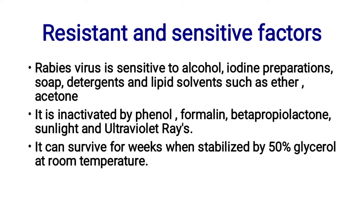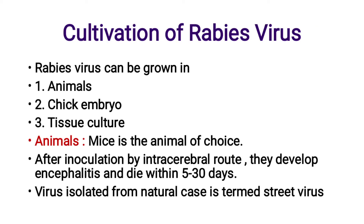It can survive for weeks when stabilized by 50% glycerol at room temperature. Then cultivation of Rabies Virus. Rabies Virus can be grown in animals, chick embryo, and tissue culture. In the case of animals, mice are the best choice for cultivation. After inoculation by the intracerebral route, they develop encephalitis — inflammation of the brain — and die within 5 to 30 days.